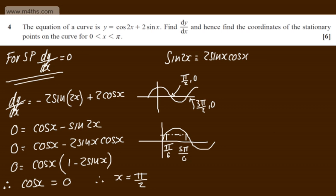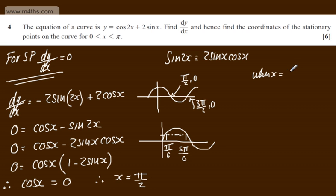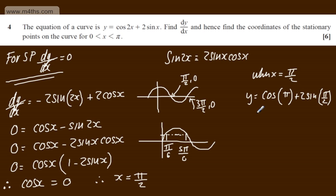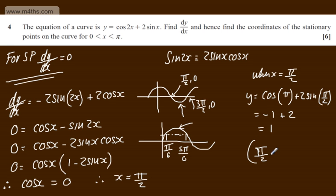Now we need to find the y-coordinates. When x = π/2, y = cos(2 × π/2) + 2sin(π/2) = cos(π) + 2sin(π/2). cos(π) = -1 and sin(π/2) = 1, so y = -1 + 2(1) = 1. So the coordinate is (π/2, 1).